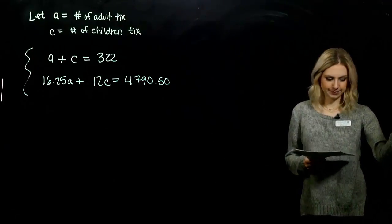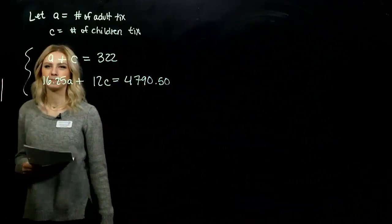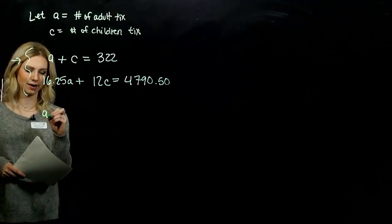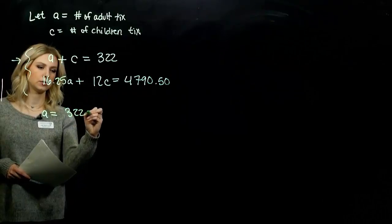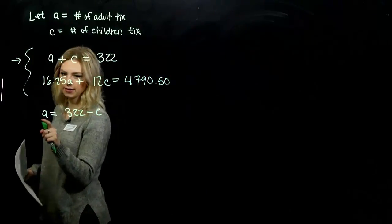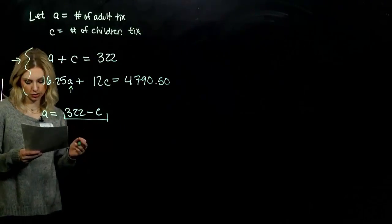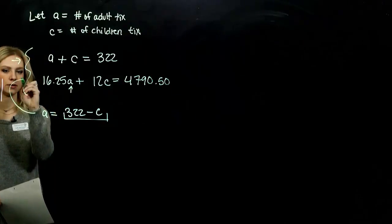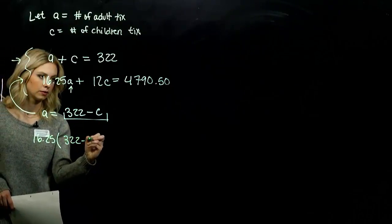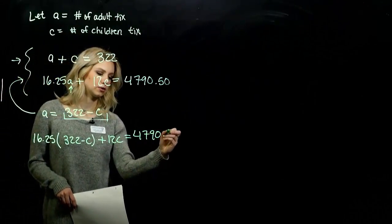We've got our system based off of number of people that came and the price altogether. To go ahead and solve, I want to use the substitution method, just so we get some more practice with the different kinds. I'm going to take that first line and solve it for one of the variables. I'm just going to go for A. So if I want A on its own, I need to subtract C. So I'm looking at A = 322 - C. And those two are equivalent. So I can substitute in, wherever I see an A up here, that entire quantity, 322 - C. So 16.25(322 - C) + 12C = 4790.50.